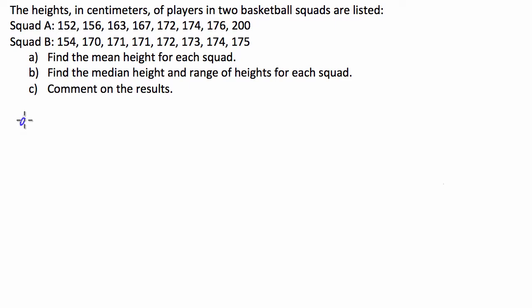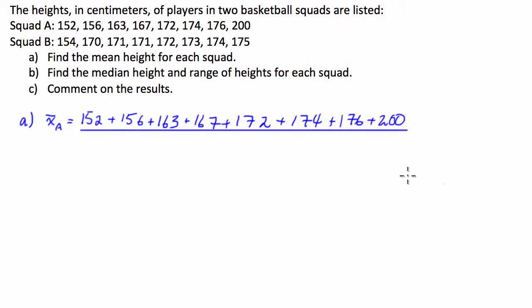Part A. We are asked to find the mean height for each squad. To find the mean, that's usually written like this, an X with a dash over the top, and this is going to be for squad A. That's going to be equal to all of these numbers added together. So we have 152 plus 156, plus 163, plus 167, plus 172, plus 174, plus 176, plus 200. And then we have to divide that by the number of scores, divided by 8. And we get an average of 170 centimeters. Now it's important that we put our units on here, guys.